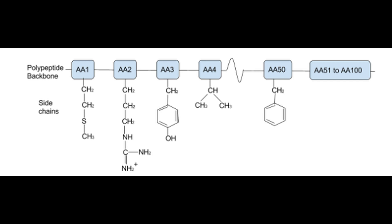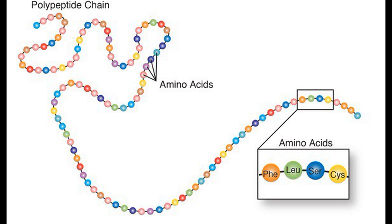On the other hand, the R group of each amino acid sticks freely outward from the chain, which is why the R group is also referred to as the side chain. Proteins have a sequence of amino acid side chains in the same way DNA and RNA have sequences of nucleotides. And just like with nucleotides, the amino acid sequences of proteins are often abbreviated with one or three letters. The properties of proteins are determined by the amino acid sequences, which in turn are determined by the nucleotide sequence of the mRNA during protein synthesis.